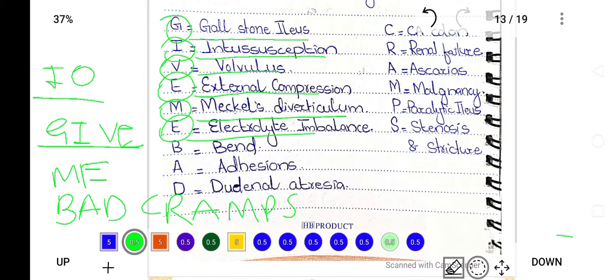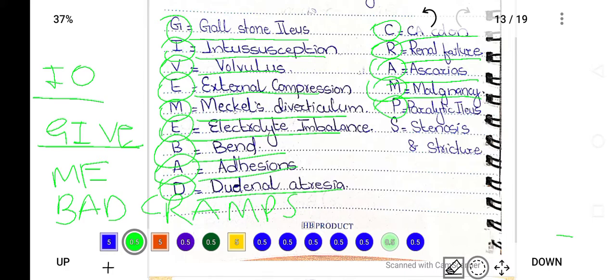E for electrolyte imbalance, B for band, A for adhesions, D for duodenal atresia. GRAMS: C for CA colon, R for renal failure, A for ascariasis, M for malignancy, P for paralytic ileus, and S for stenosis or stricture.